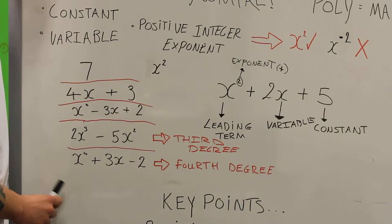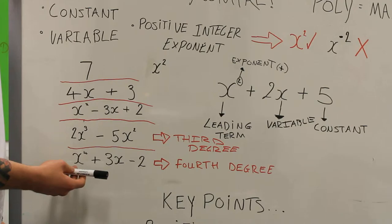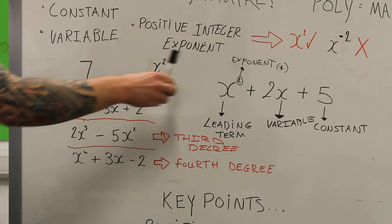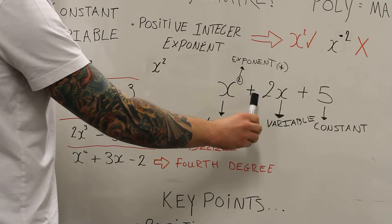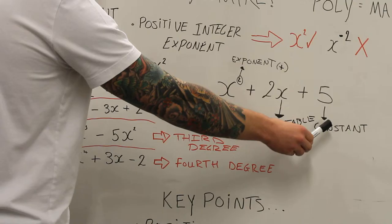Now you know what a polynomial is, I'll just go through some examples here to clear some things up. Here we have 7, 4x plus 3, x squared minus 3x plus 2, 2x cubed minus 5x squared, x to the power of 4 plus 3x minus 2.